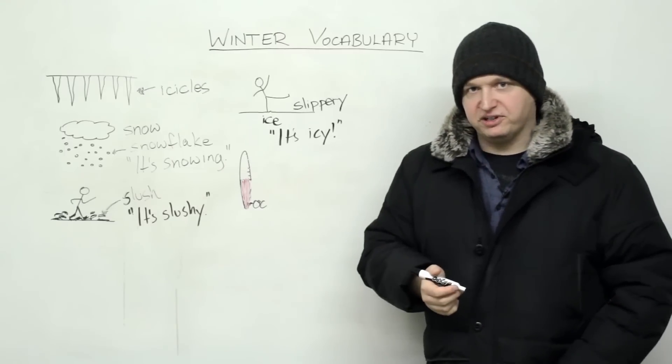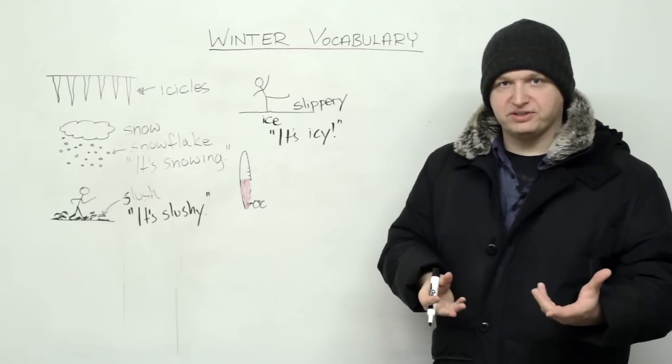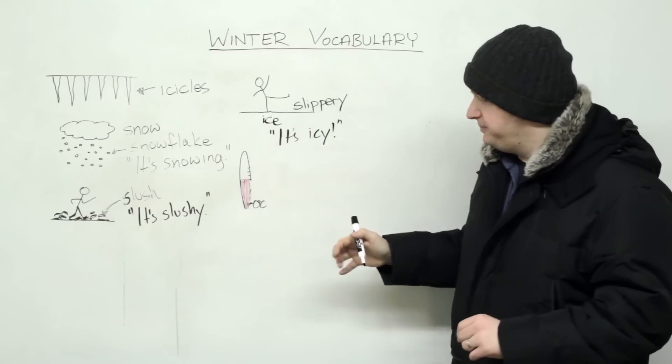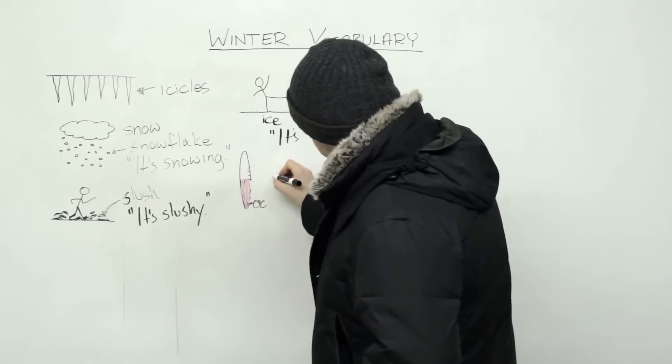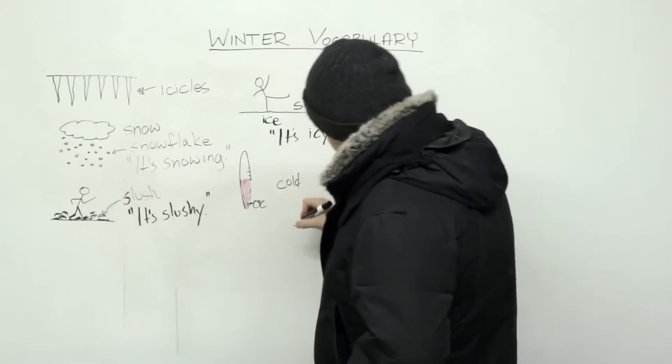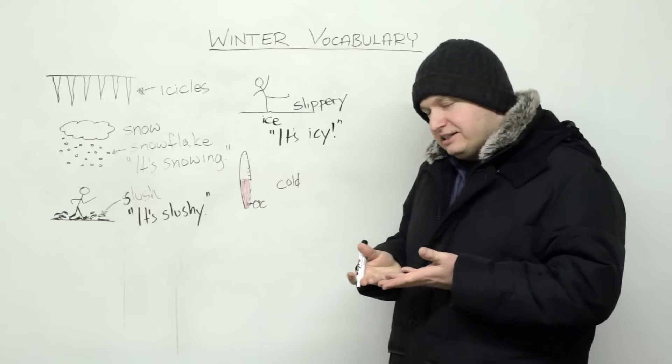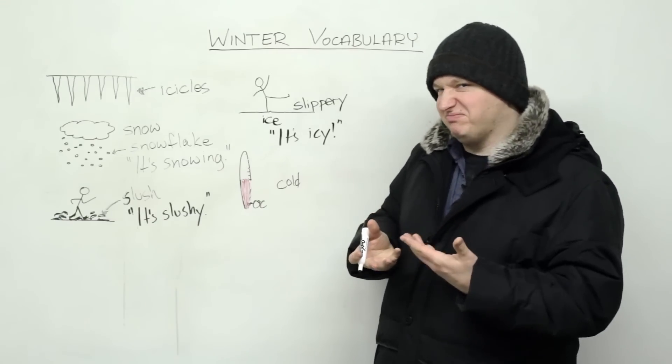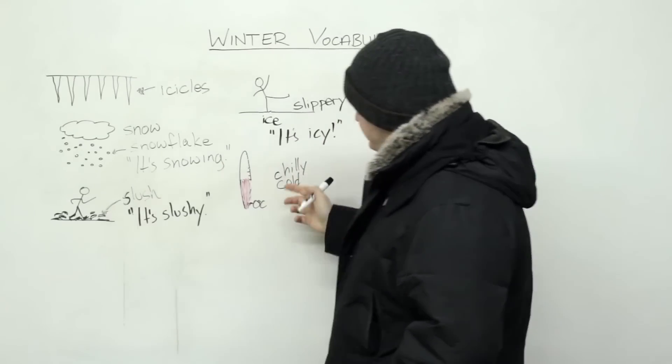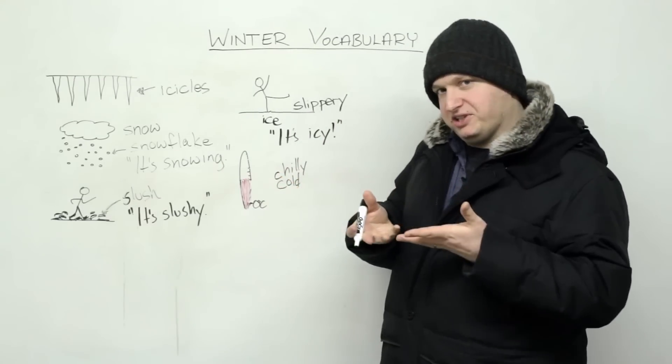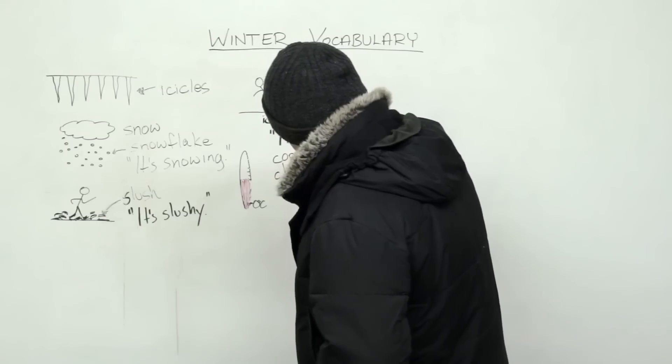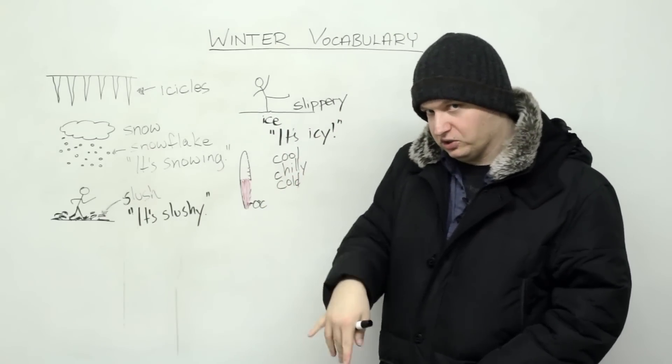Now, when we talk about temperature, most of you know the word cold, right? So when you start from the top, you know, we have hot and everything like that. But if we start from cold, let's put cold over here. What is a little warmer than cold, but still not that nice? We say chilly. What's a little bit warmer than chilly, but still not warm? Is cool. So we have cool, chilly, cold.